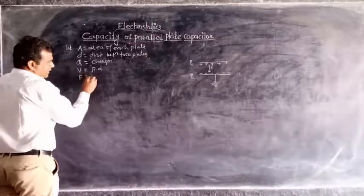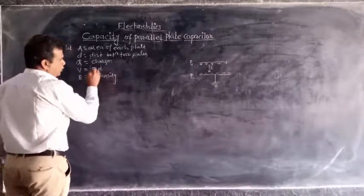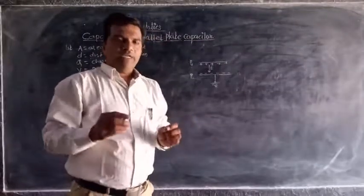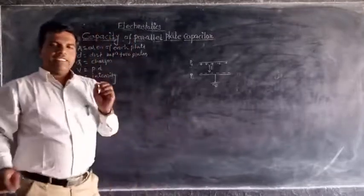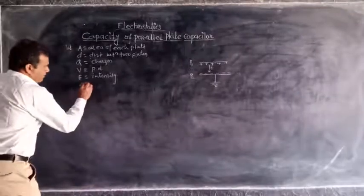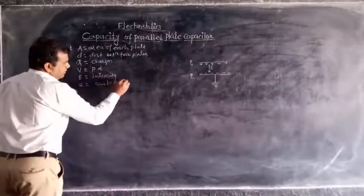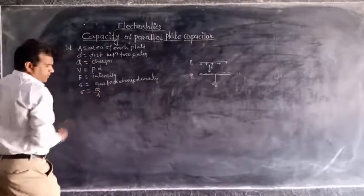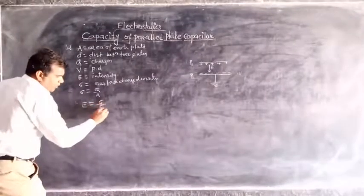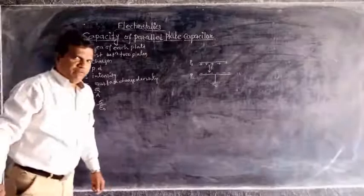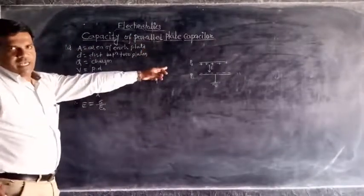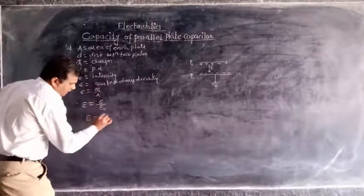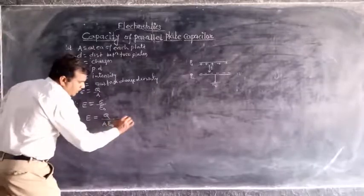Let E be the electric intensity directed from positive charge to negative charge. As we have seen, the electric intensity at a point just outside and near a charged conductor is E equal to sigma upon epsilon-zero, where sigma is the surface charge density. That is, sigma equals Q upon A. Therefore, electric intensity E equals sigma upon epsilon-zero, where epsilon-zero is the permittivity of free space, meaning there is no dielectric medium between the two plates. So E equals Q upon A times epsilon-zero. This is equation number 1.